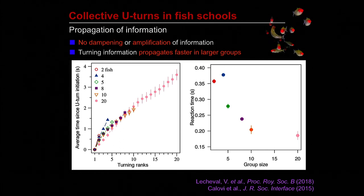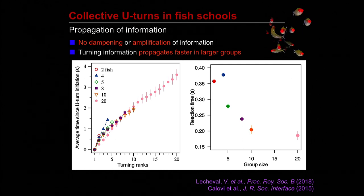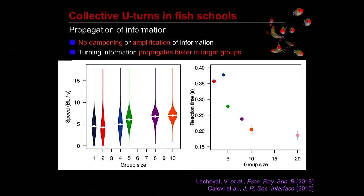How does the U-turn propagate within a school once it has been initiated? If we look at the average time interval between the successive turns of individuals, we can see that it is almost constant for a given group size. We found no evidence for the existence of a damping or an amplification of information as fish adopt the new direction of motion — there is no amplification.